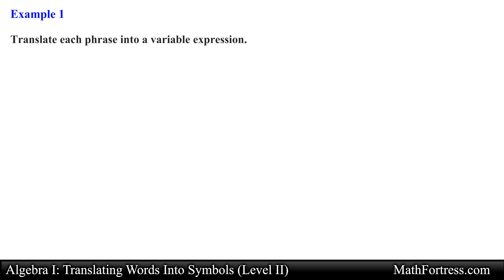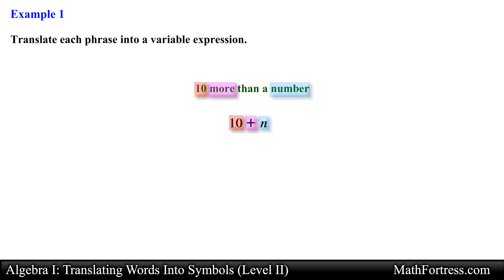Translate each phrase into a variable expression. Our first phrase is '10 more than a number.' This phrase is describing an addition between two numbers because of the keyword 'more.' So this phrase translates to 10 plus n, or n plus 10. Either form represents the same translation of the phrase.